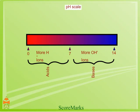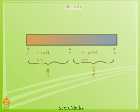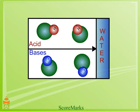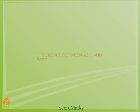The pH value of an acid is less than 7.0, whereas the pH value of a base is greater than 7.0. Acids change the litmus paper to red, whereas bases change the litmus paper to blue. Acids free hydrogen ions when mixed with water.